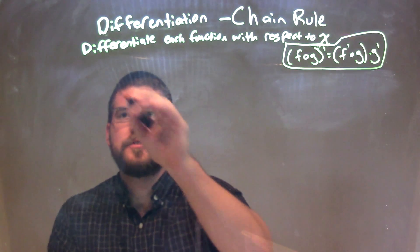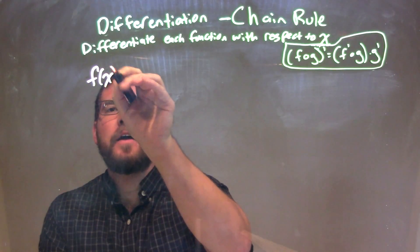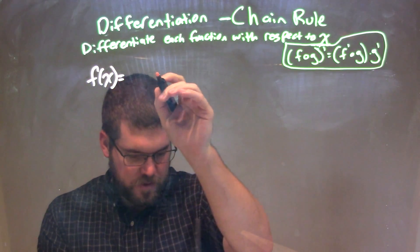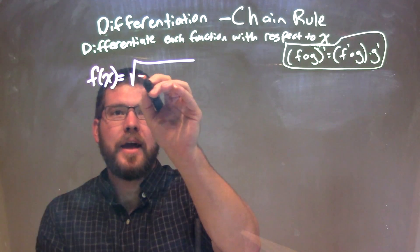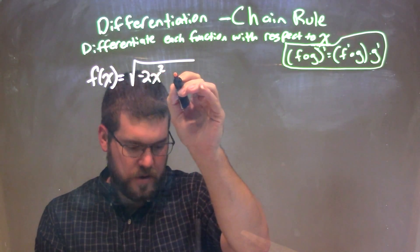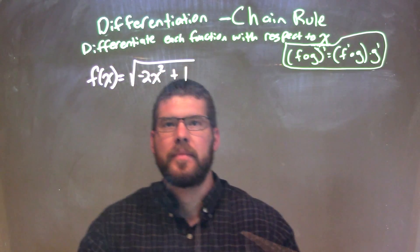We're going to differentiate each function with respect to x. So if I was given this function, f of x is equal to the square root of negative 2x squared plus 1.